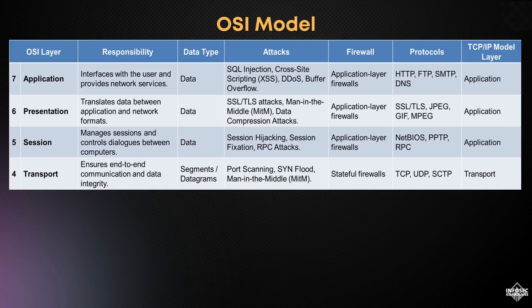Moving on to the transport layer, layer 4 ensures end-to-end communication, reliability, and data integrity between hosts. Here, data is organized into segments or datagrams. Threats like port scanning and SYN flood attacks are common, but stateful firewalls are employed to monitor and control traffic flow. Protocols like TCP, UDP, and SCTP are vital at this layer, aligning with the transport layer in the TCP/IP model.